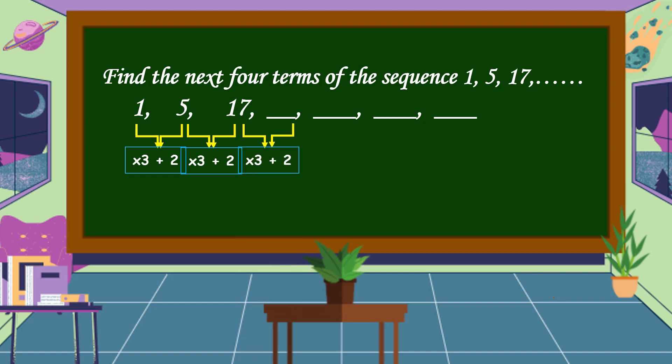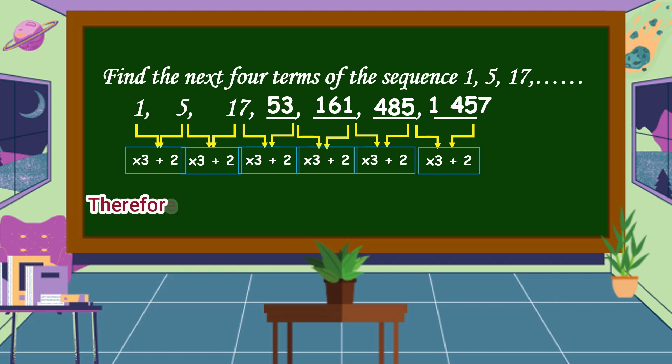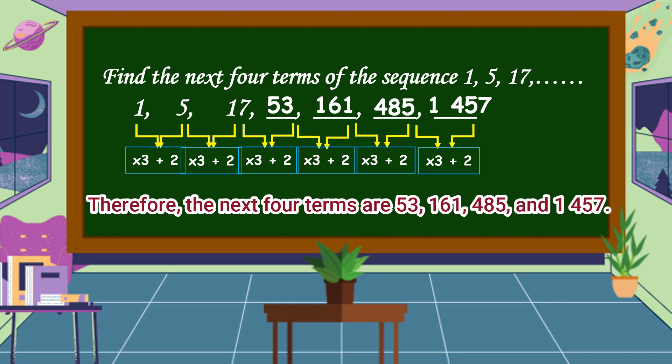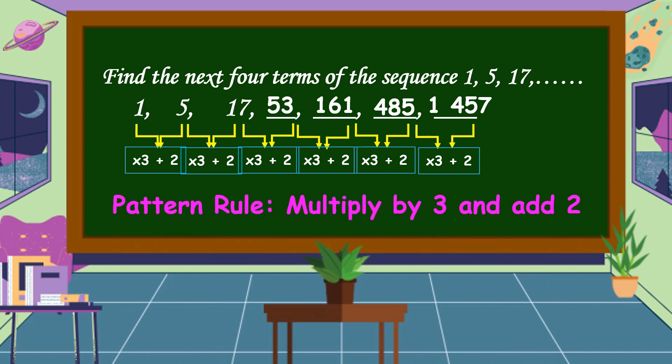53 times 3 equals 159, plus 2 equals 161. 161 times 3 equals 483, plus 2 equals 485. 485 times 3 equals 1,455, plus 2 equals 1,457. Therefore, the next four terms are 53, 161, 485, and 1,457. The pattern rule is multiply by 3 and add 2.